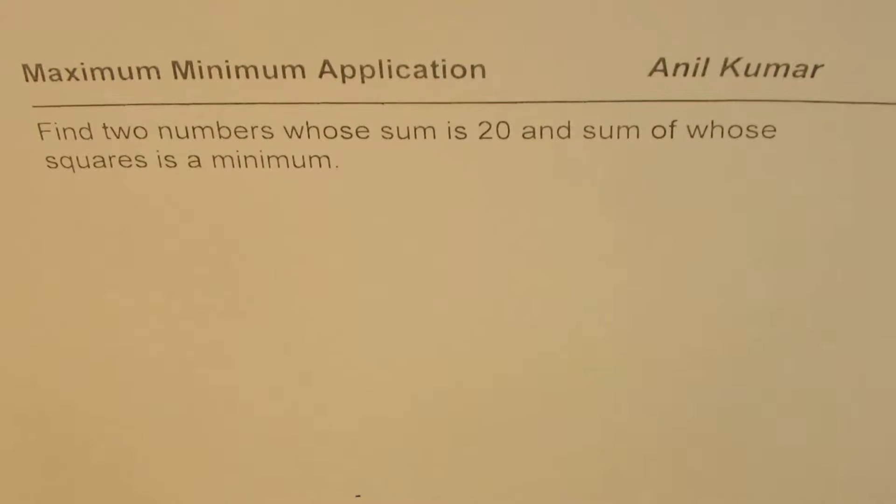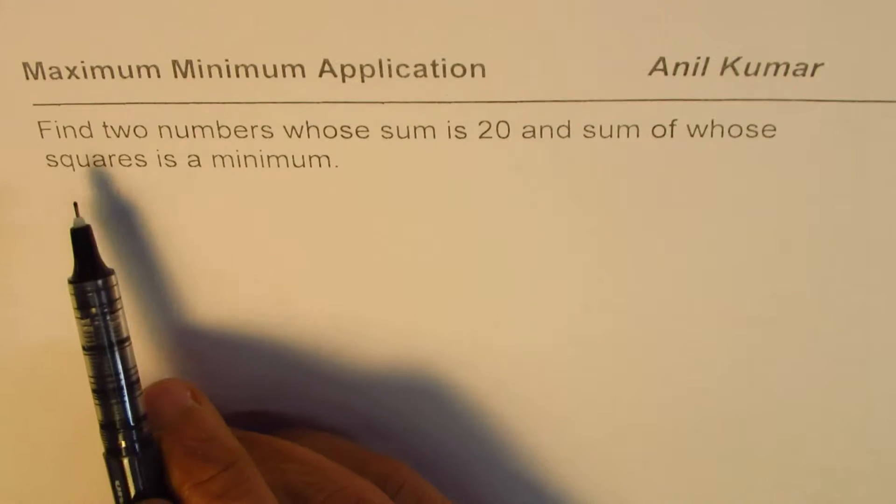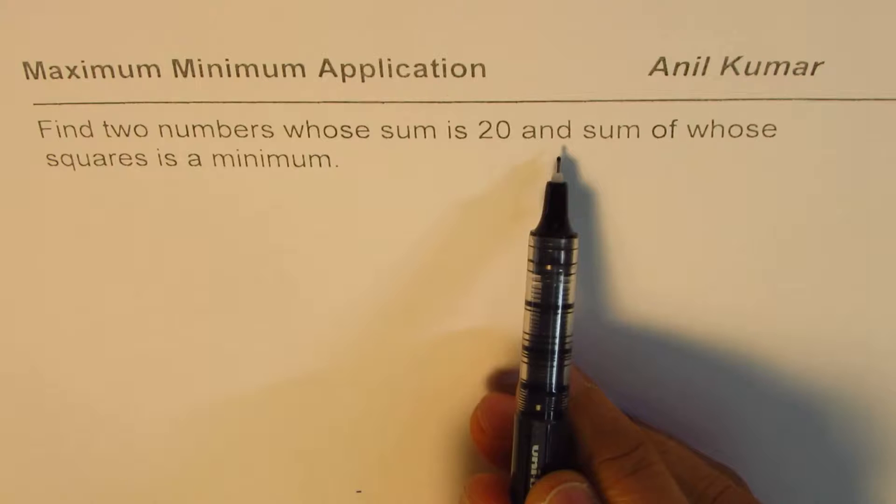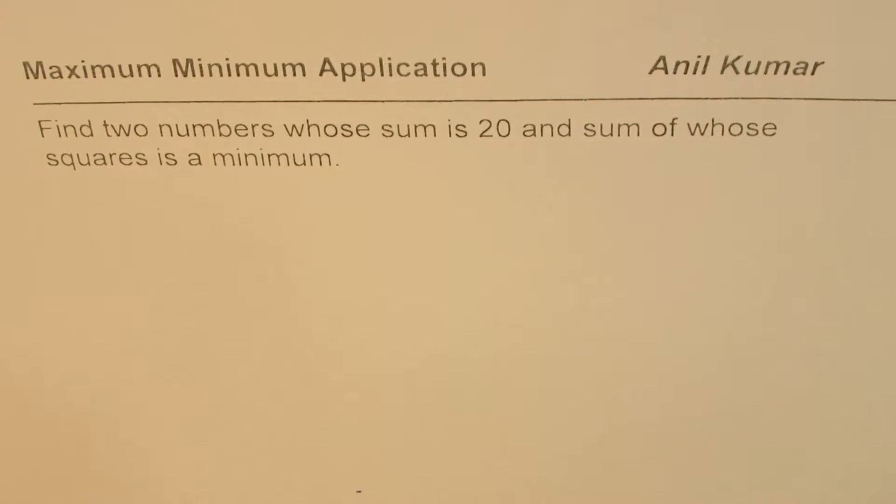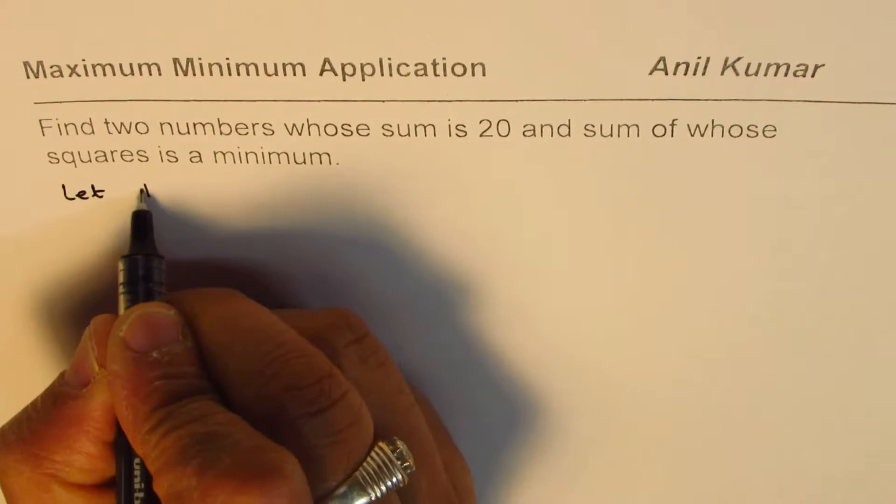I'm Anil Kumar sharing with you a question from my subscriber on YouTube. It is related to the applications of maximum and minimum. The question here is: find two numbers whose sum is 20 and sum of whose squares is a minimum.